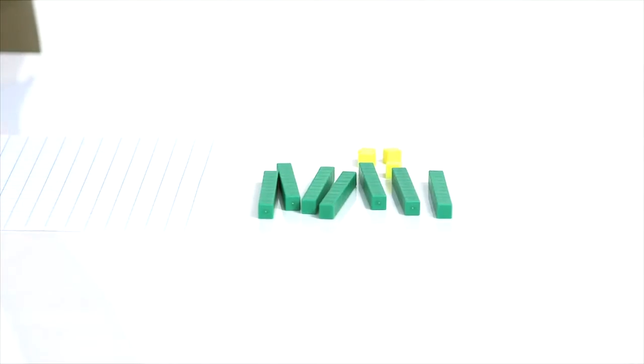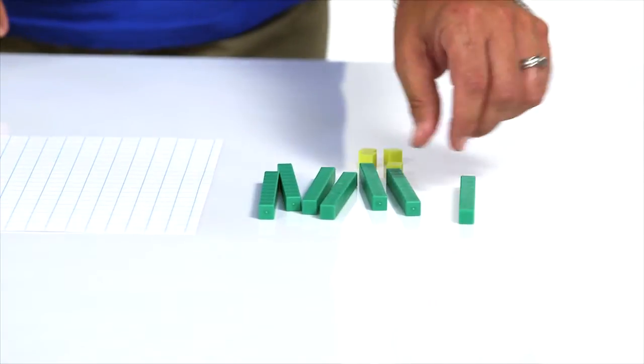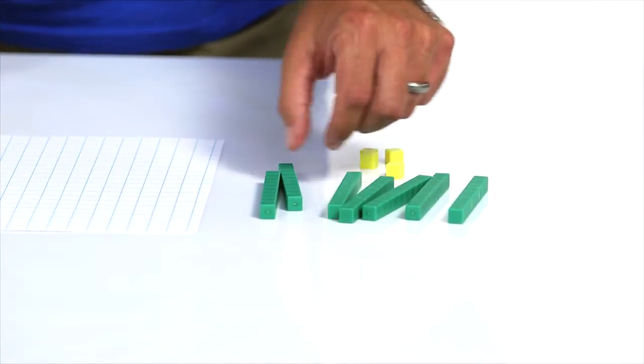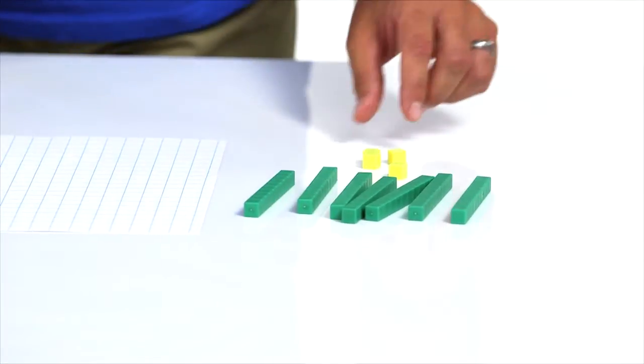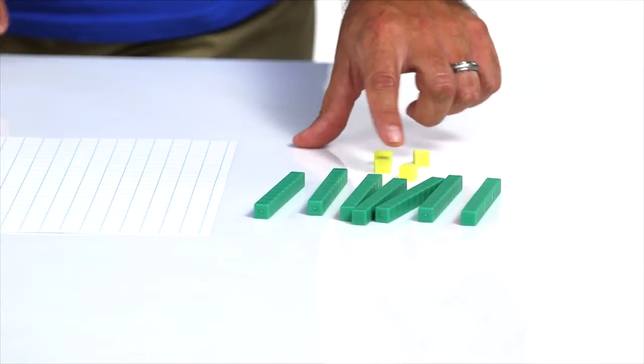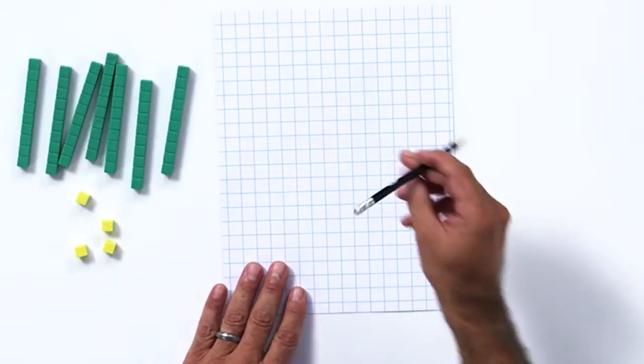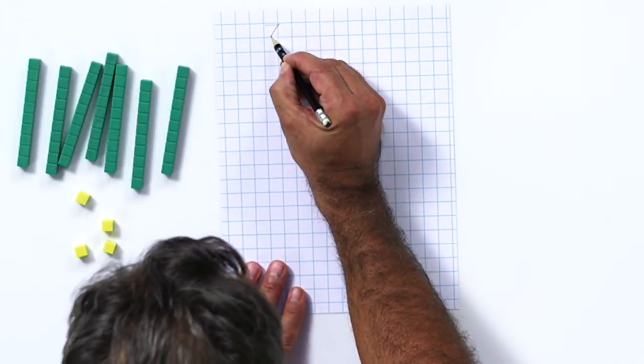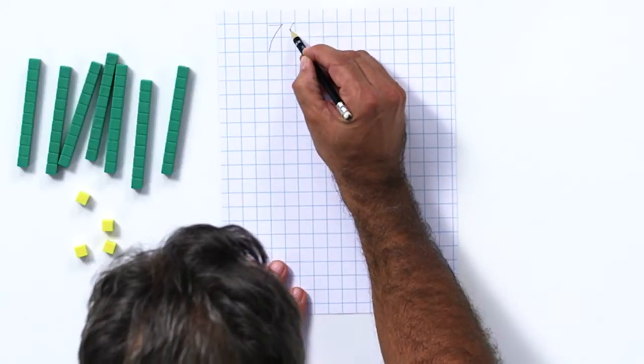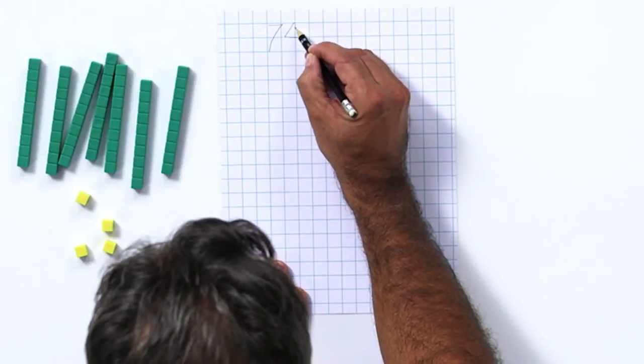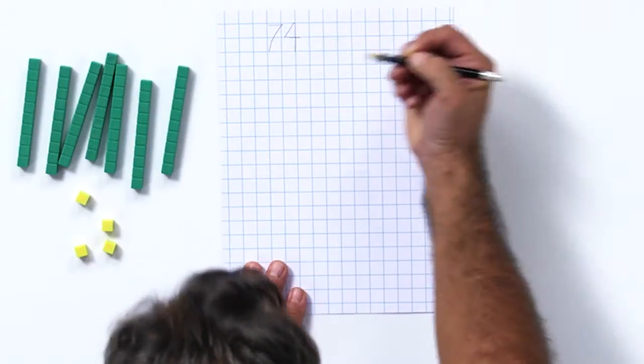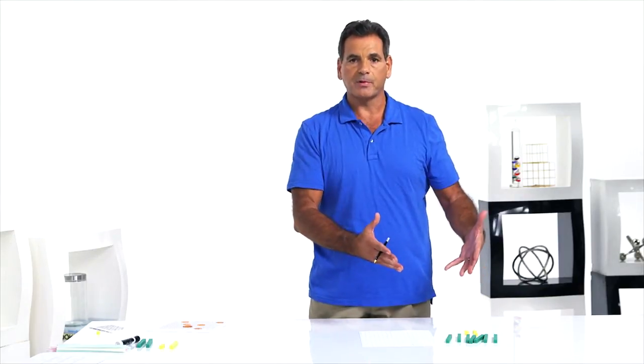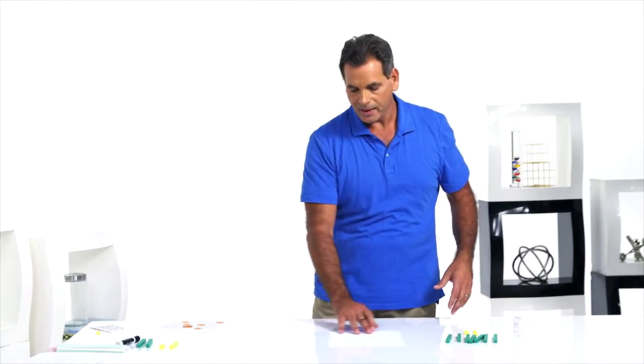Starting with base 10 blocks. 10, 20, 30, 40, 50, 60, 70, and then 1, 2, 3, 4, and then they have to write the number. We're using graph paper to give some structure since they don't have the place value strips that we used earlier.